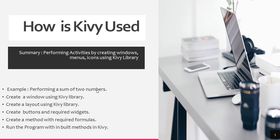At the end, you will run the program with the built-in method available in the Kivy library. The method name is 'run', which I am going to teach you in the coming tutorials. So these are the five steps for creating an application using Kivy: create the window, create the layout, create the buttons, create the method where you store the formula for performing a task, and then run the program using the built-in method called 'run'.